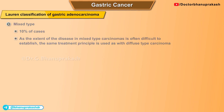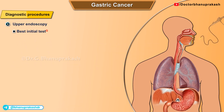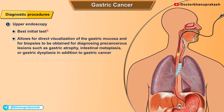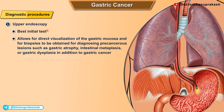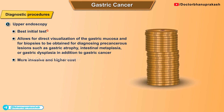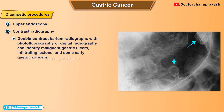The two main modalities for gastric cancer screening are upper endoscopy and contrast radiography. Upper endoscopy is the best initial test, allowing direct visualization of the gastric mucosa and biopsies for diagnosing precancerous lesions such as gastric atrophy, intestinal metaplasia, or gastric dysplasia, in addition to gastric cancer. Although more invasive and costly, upper endoscopy is more sensitive for diagnosing a variety of gastric lesions compared with alternative strategies.